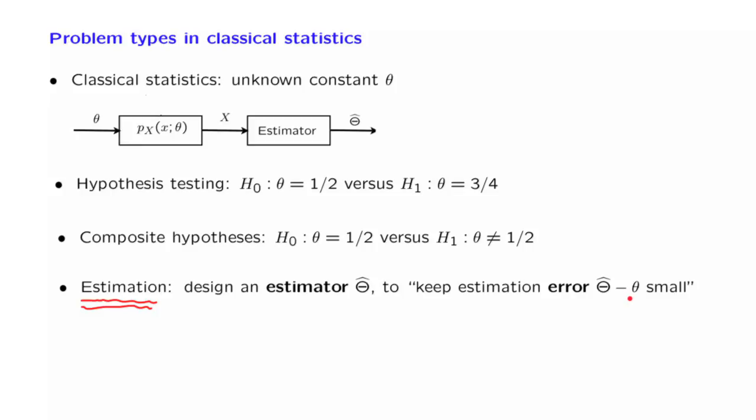You want to keep that difference small in some sense. Well, one may need a criterion of what it means to be small, and whether we want this in expectation, or with high probability, and so on. This statement, to keep the estimation error small, can be interpreted in various ways, and because of that reason, there is no single approach to the problem of designing a good estimator. And this is something that happens more generally in classical statistics. Typically, problems do not admit a single best approach. They do not admit unique answers. Reasonable people can come up with different methodologies for approaching the same problem, and there is a little bit of an element of an art involved here.